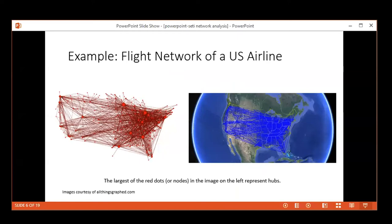Here's a flight network of a U.S. airline. On the image on the right you can see a map with the continental U.S., and on the left we see the flight connections with all the nodes and edges. The bigger red dots, the bigger nodes, are hubs like Chicago or Atlanta.